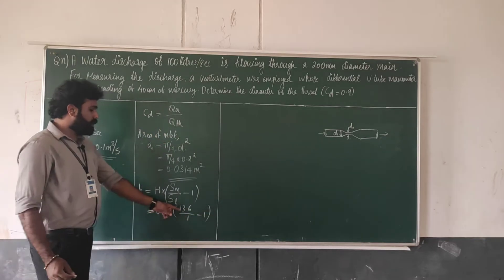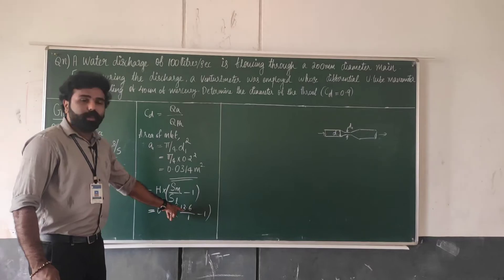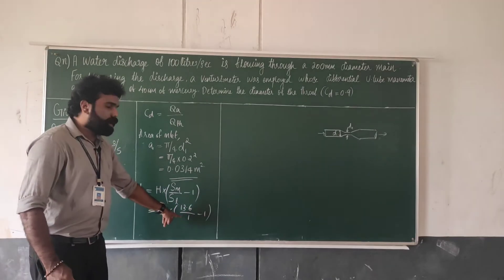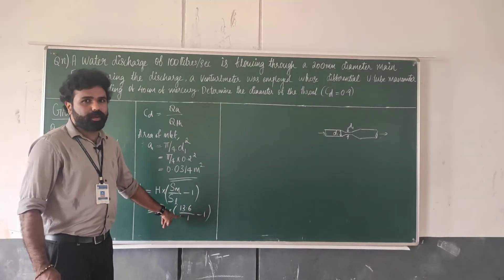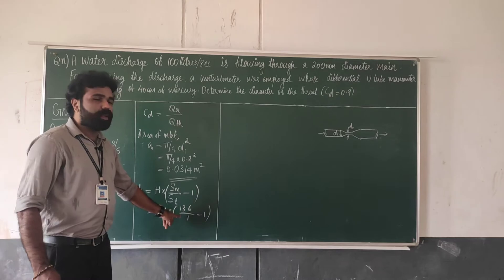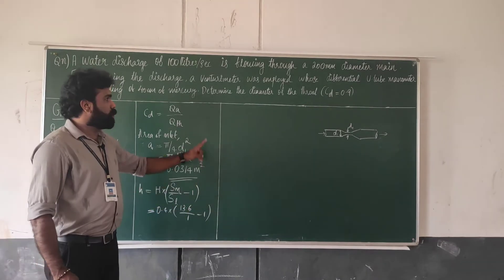The specific gravity of mercury is 13.6, and the specific gravity of water is 1.